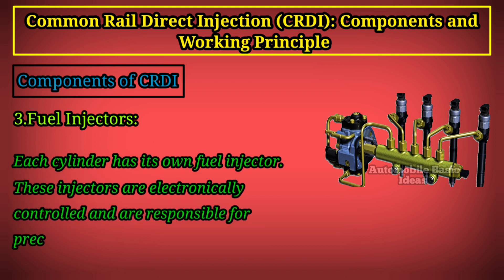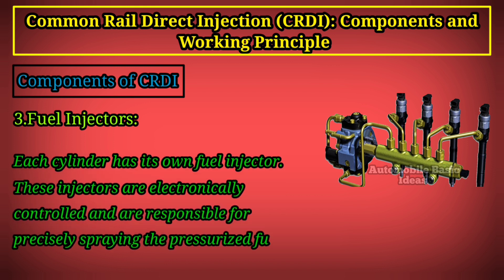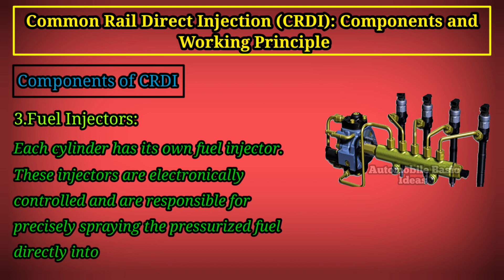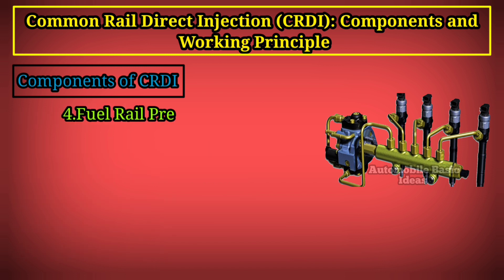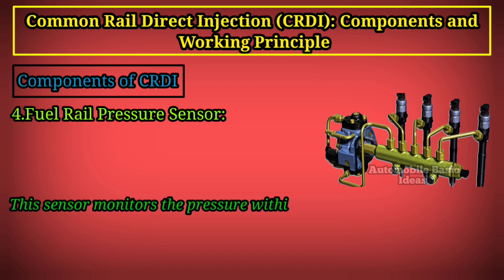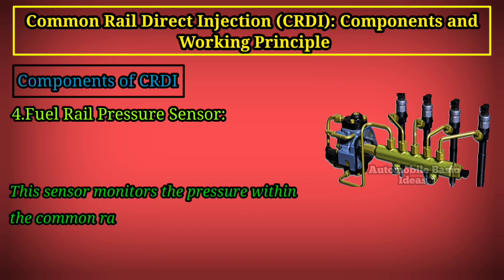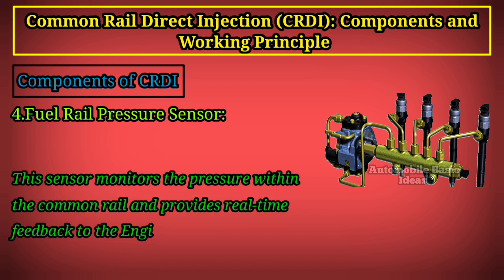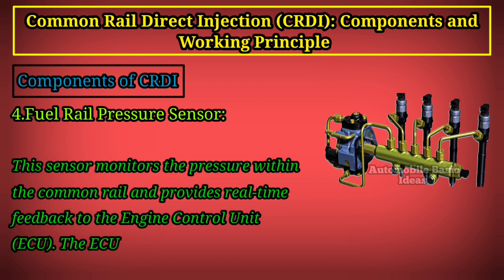Component 3 — Fuel Injectors: each cylinder has its own fuel injector. These injectors are electronically controlled and are responsible for precisely spraying the pressurized fuel directly into the combustion chamber. Component 4 — Fuel Rail Pressure Sensor: this sensor monitors the pressure within the common rail and provides real-time feedback to the engine control unit (ECU).